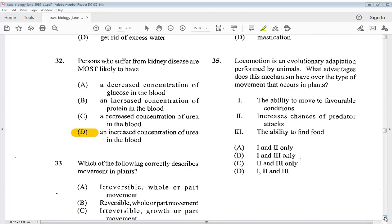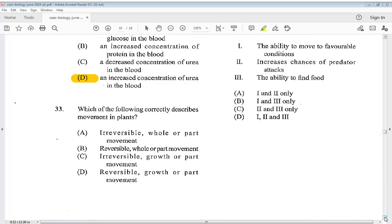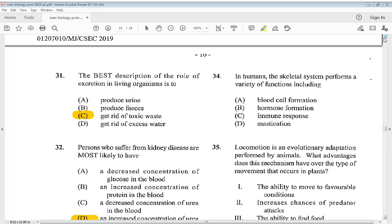Question 33 says which of the following correctly describes movement in plants: A irreversible whole or part movement, B reversible whole or part movement, C irreversible growth or part movement, D reversible growth or part movement. Question 34: In humans the skeletal system performs a variety of functions including A blood cell formation, B hormone formation, C immune response, or D mastication. So the answer is A, blood cell formation.